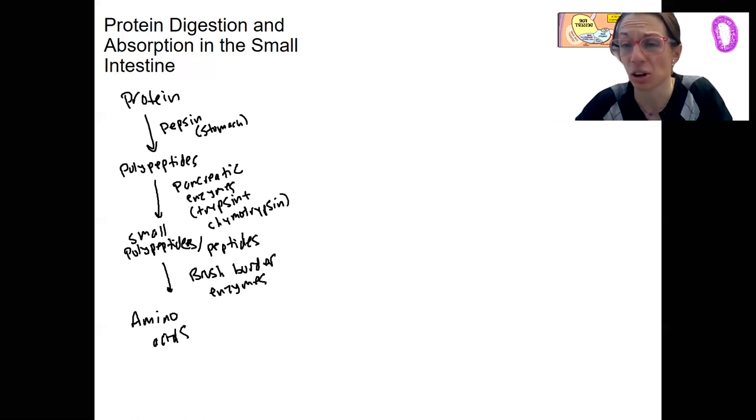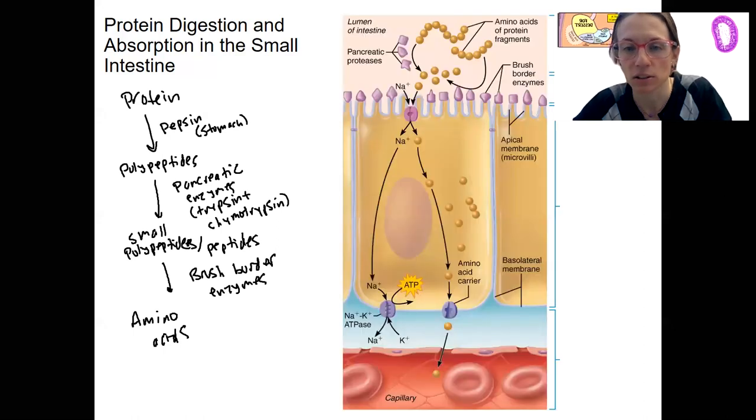Now transcytosis can occur a little bit, but we're actually mostly going to go through the cell again, just like we did with carbohydrates. This is what that looks like. Nothing new here.